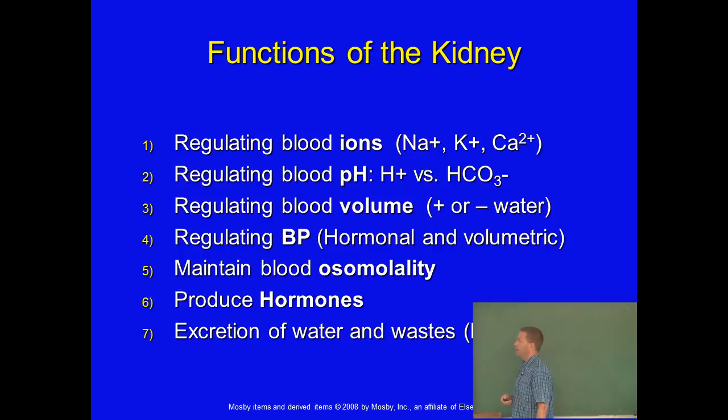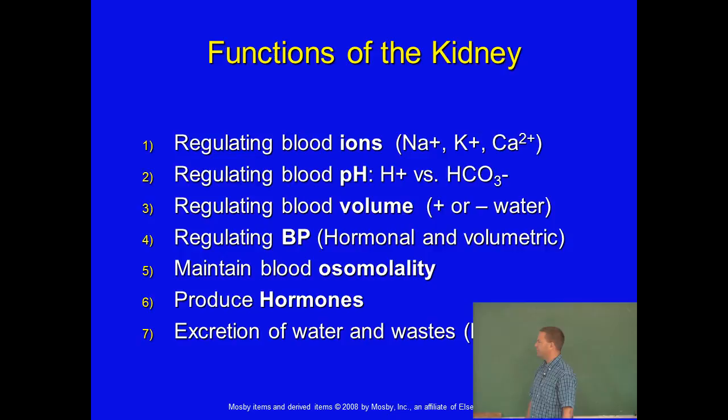Animals that are herbivores tend to sometimes have alkaline urine pH, whereas animals that are carnivores will always have an acidic pH unless they have a UTI. The urinary system is also important for regulating the balance of water.